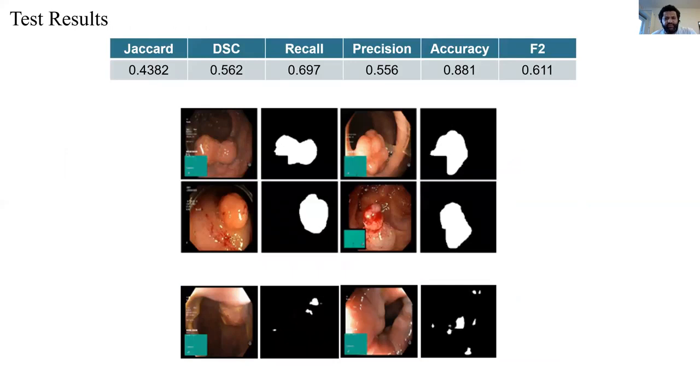In terms of evaluation, Jaccard and dice similarity coefficient shows how the produced masks intersect with the ground truth. Also, we show the per-pixel recall, precision, and F2 on the test set. Visually, the figure shows some successful productions on the top two rows and also the model has some failures, as shown in the third row.